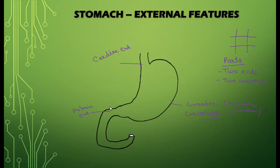On the right side we have the lesser curvature. It will form the right border of the stomach and it will give attachment to the lesser omentum. The most dependent part of the lesser curvature is known as the angular notch.